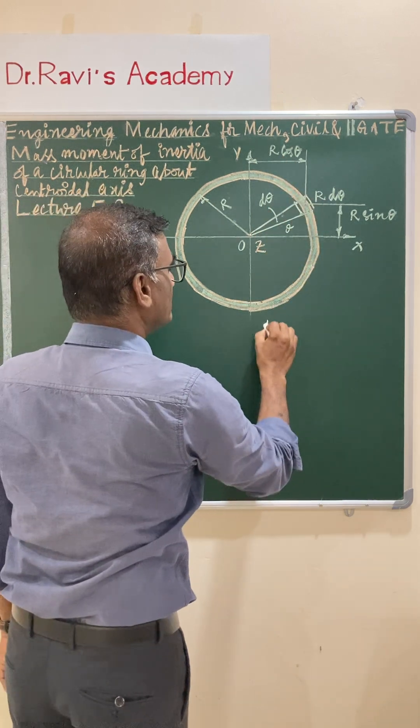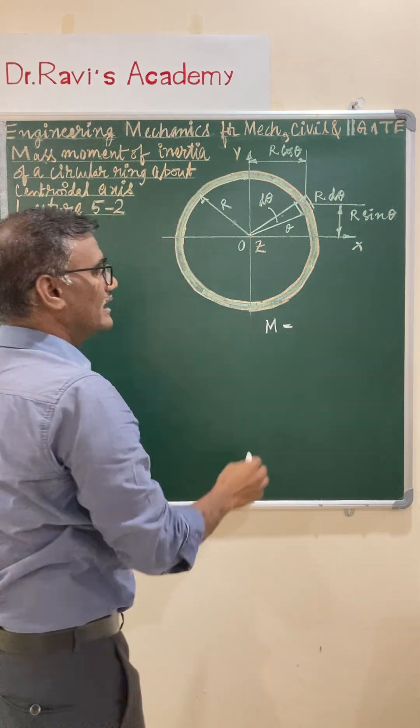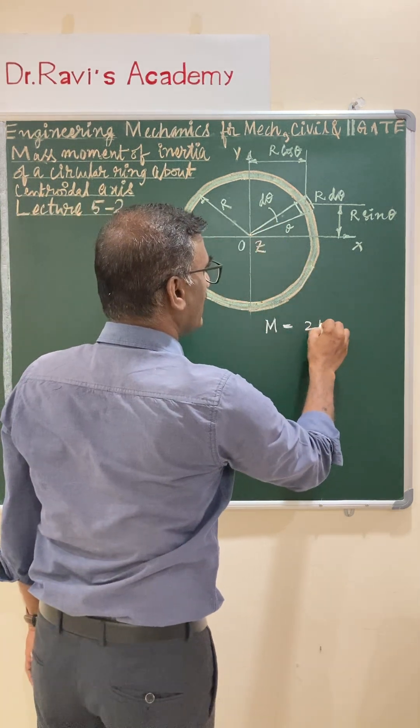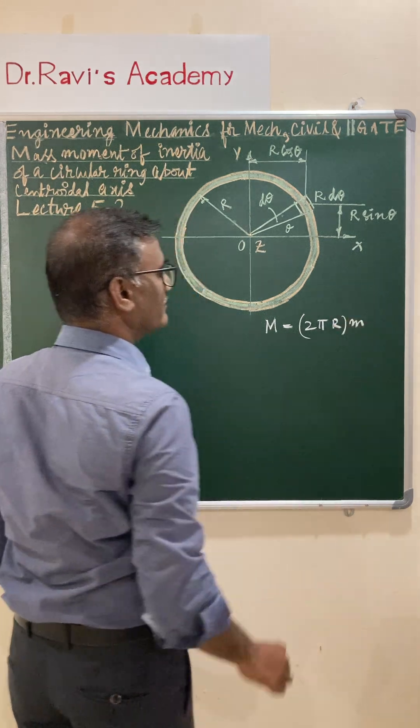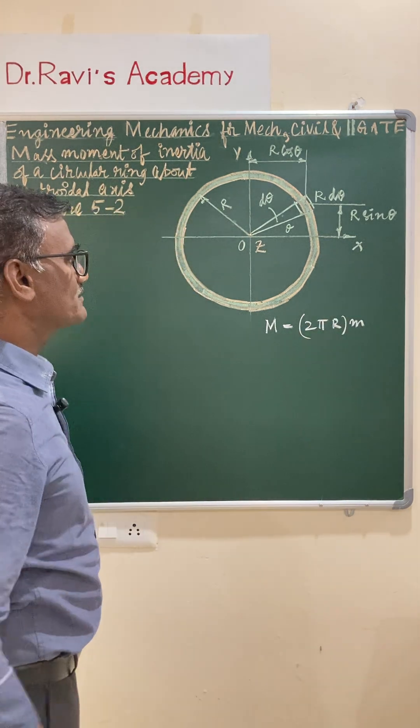Now, let us assume that M is the total mass and the circumference is 2πr. If you multiply with m, then small m will be mass per unit length.